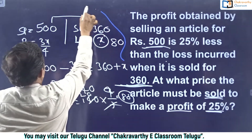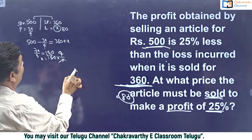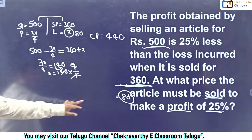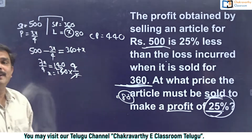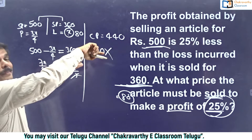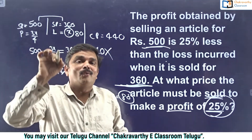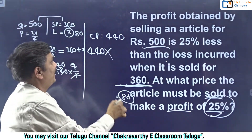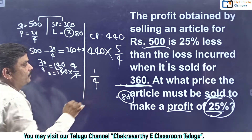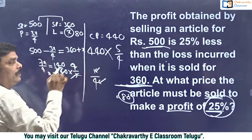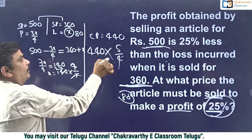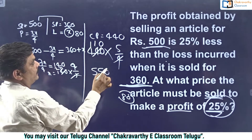Now, the question asks: to get 25% profit, for how much must it be sold? Cost price is 440. 25% profit means 1/4, so 4 is cost price and 1 is profit, giving 5 parts as selling price. The direct fraction is 5/4. So selling price = 440 × 5/4 = 550. That is the final answer.